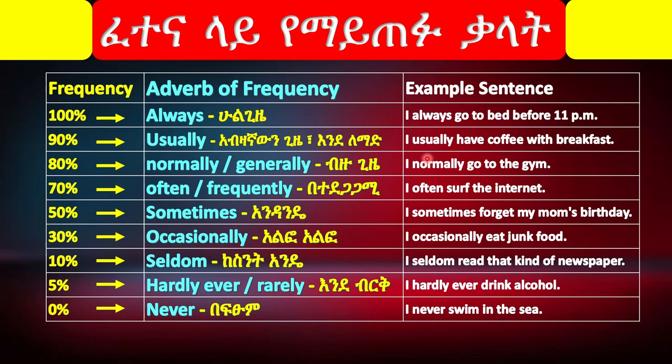These are all adverbs and they describe how frequently we do an activity or the frequency of habits. To help you understand when to use each adverb of frequency, I will add some approximate numbers or percentage of frequency or possibility of it happening, to give you a general idea of frequency associated with each.